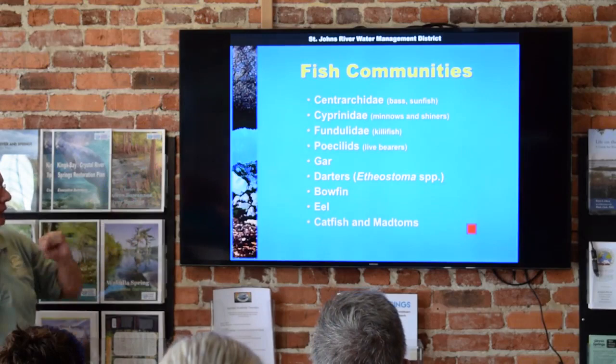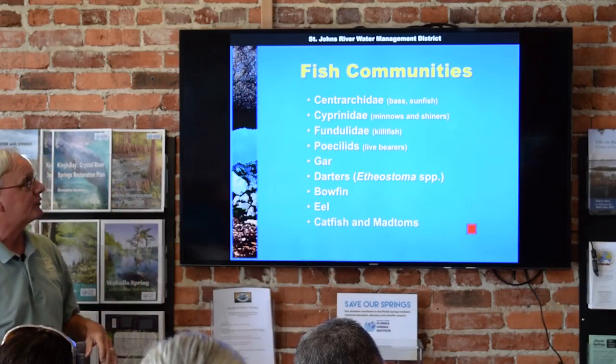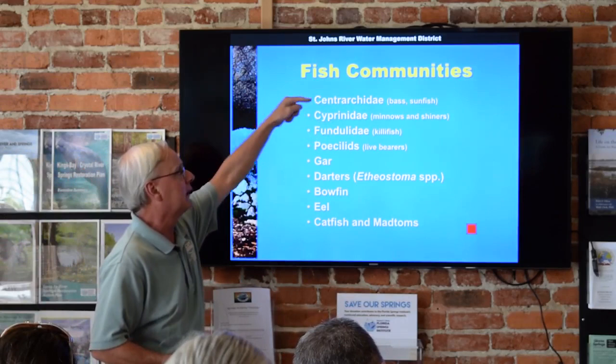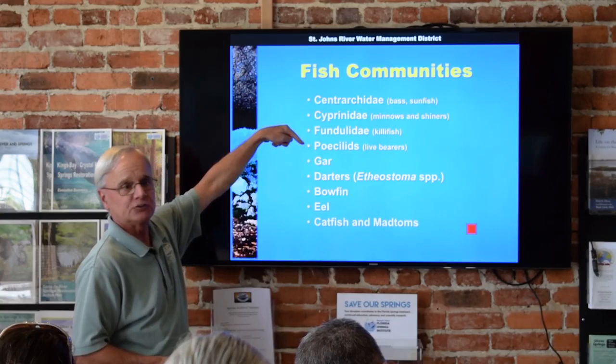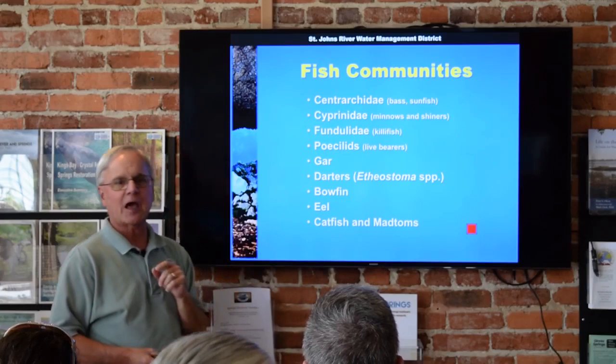Fish communities are kind of similar to benthic invertebrates — nothing particularly unique about the spring run fish communities; they're the same as what you see in other Florida river systems. They're basically dominated by the big four: bass and bream, minnows and shiners, killifish and livebearers like mosquito fish and sailfin molly. And then we get gar, a couple species of darters, bowfin or mudfish, eel, and the catfish and madtoms.